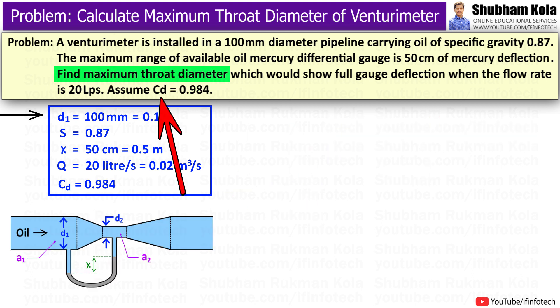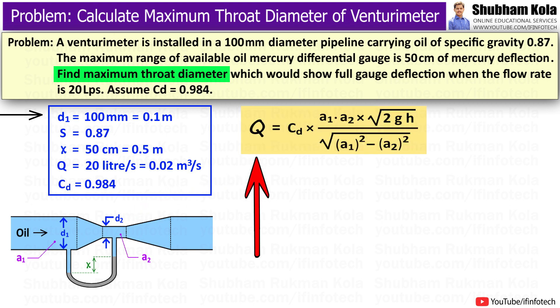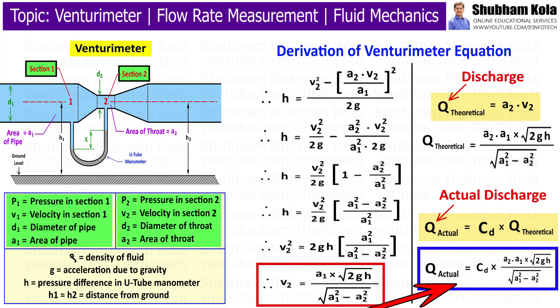In this problem, we want to calculate the throat diameter of venturimeter, that is small d2. And we can calculate small d2 with the help of flow rate formula, also known as discharge. And the discharge formula we had derived in previous video.